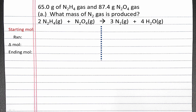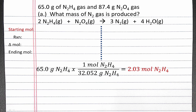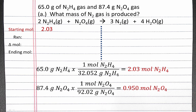To calculate our starting moles, we can use dimensional analysis. We can convert 65 grams of N2H4 into moles of N2H4, and we have 2.03 moles of N2H4. We can also convert our 87.4 grams of N2O4 into moles of N2O4 using its molar mass, and we get 0.950 moles of N2O4.